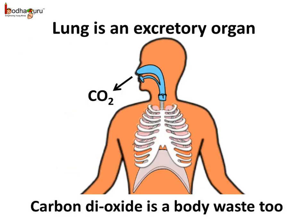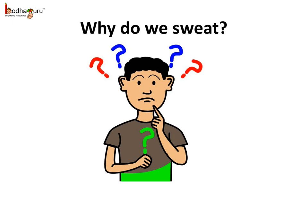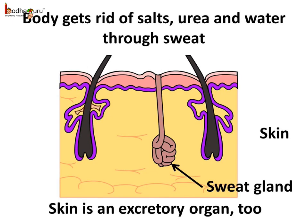Not only through urine, we eliminate waste by other ways too. For example, carbon dioxide is a waste — we send it out of our body through exhalation. Have you ever wondered why we sweat? The sweat also contains the waste products of our body. The sweat glands present under the skin secrete sweat, which comes out through small pores in the skin called sweat pores. The body gets rid of some urea, excessive salt, and water through sweat. So we can say the skin too is an excretory organ of our body.